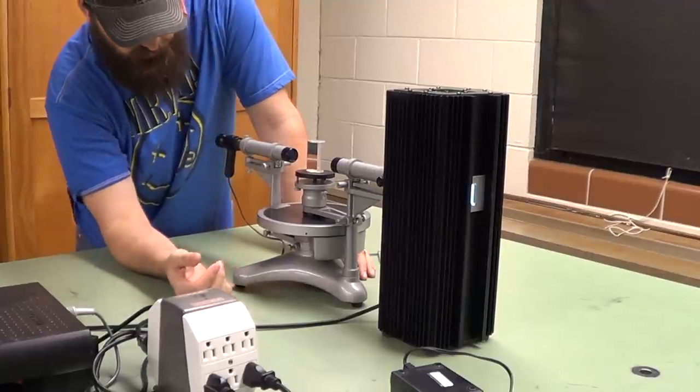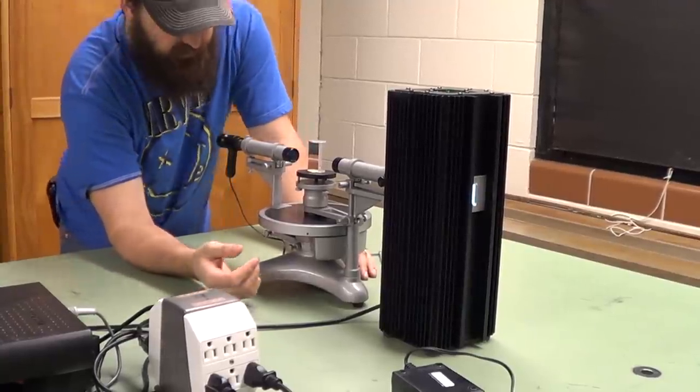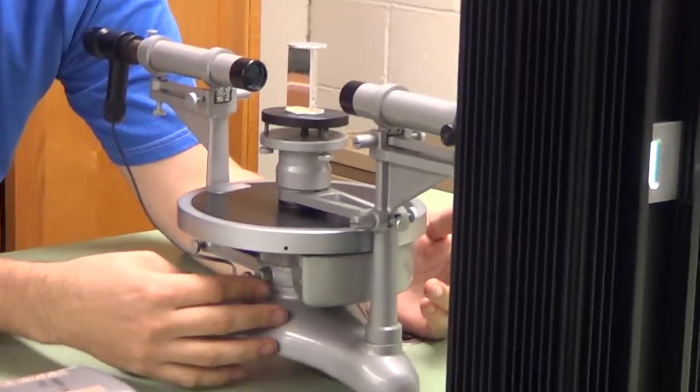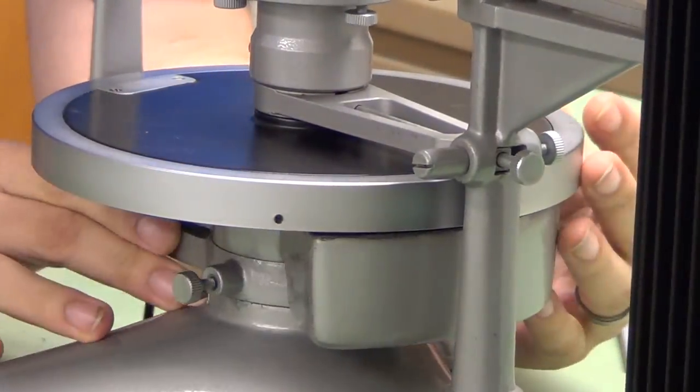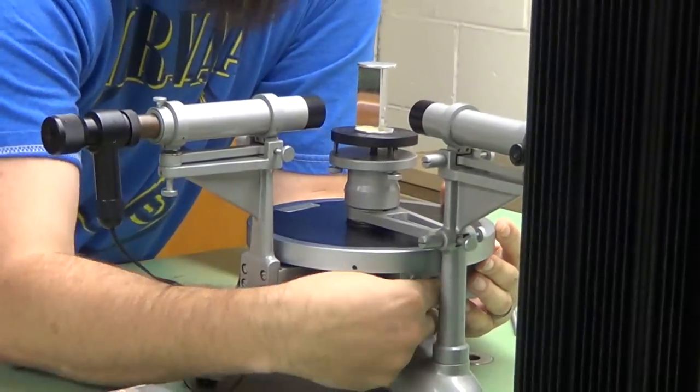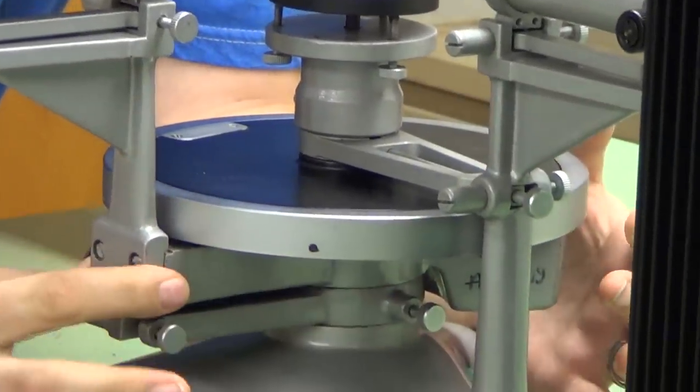There are three screws that we'll be using on the spectrometer to make adjustments. This screw here, to the right of the imaging telescope, unlocks the imaging scope. And you can tighten it down to lock the scope.